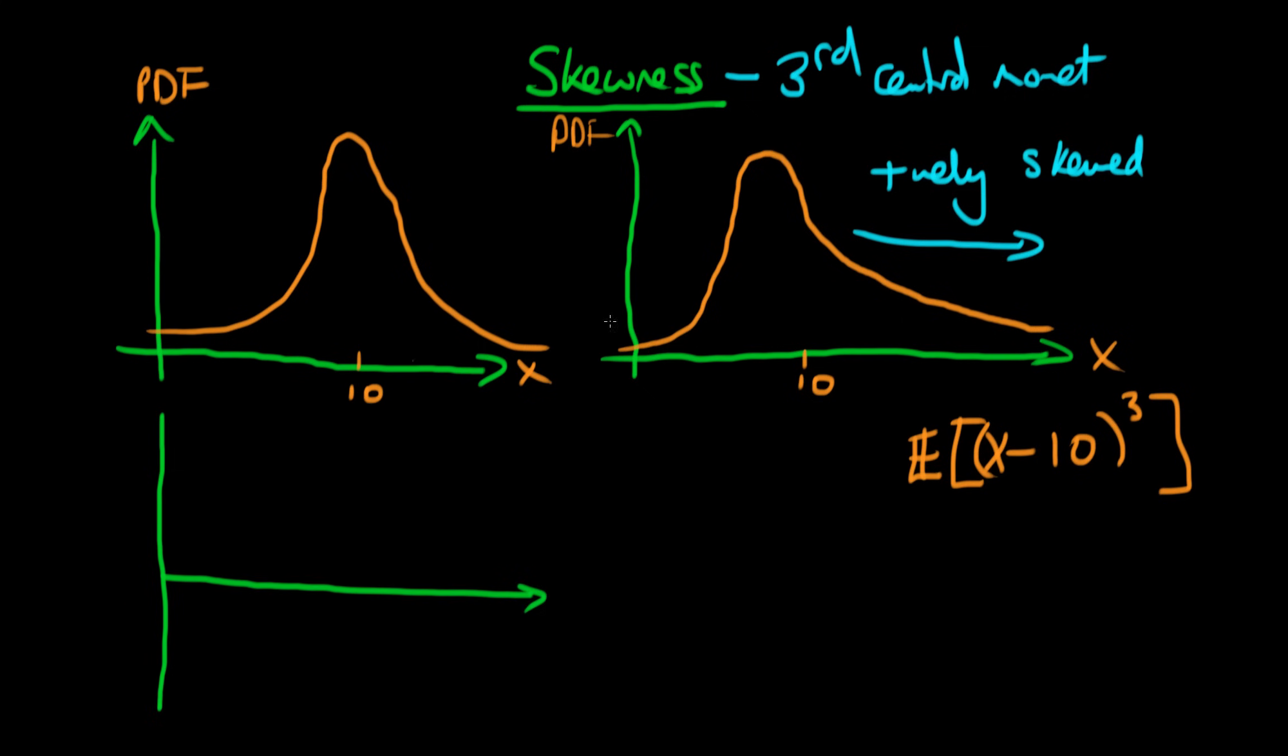If we calculate (x minus 10)³ for every value of x and plot that graph, when x is around zero, (x minus 10)³ is a really big negative number. At x equals 10, it's zero.